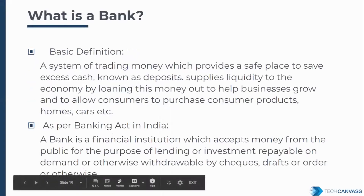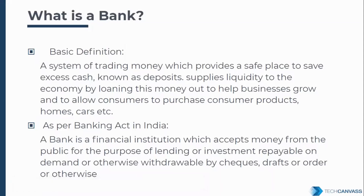A bank is basically a system of trading money, which provides a place where customers can keep their excess money for security purposes. It not only helps with depositing cash but also helps liquidate funds by providing loans. Banks serve both commercial and corporate purposes, and we have two main account types: savings accounts and corporate accounts.